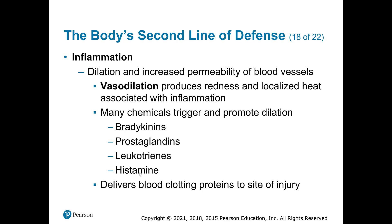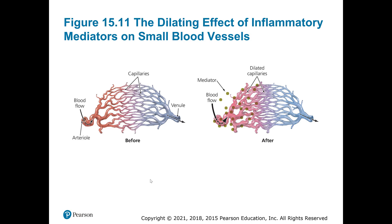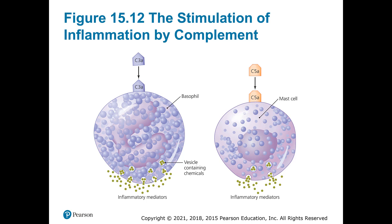Figure 15.12 shows those inflammatory chemicals getting released by those different granulocytes and leukocytes. How do they know to get released? Here we see complement again — this is one way complement can trigger inflammation. Complement can go and bind to these granulocytes and tell them to release their inflammatory chemicals because inflammation needs to occur.